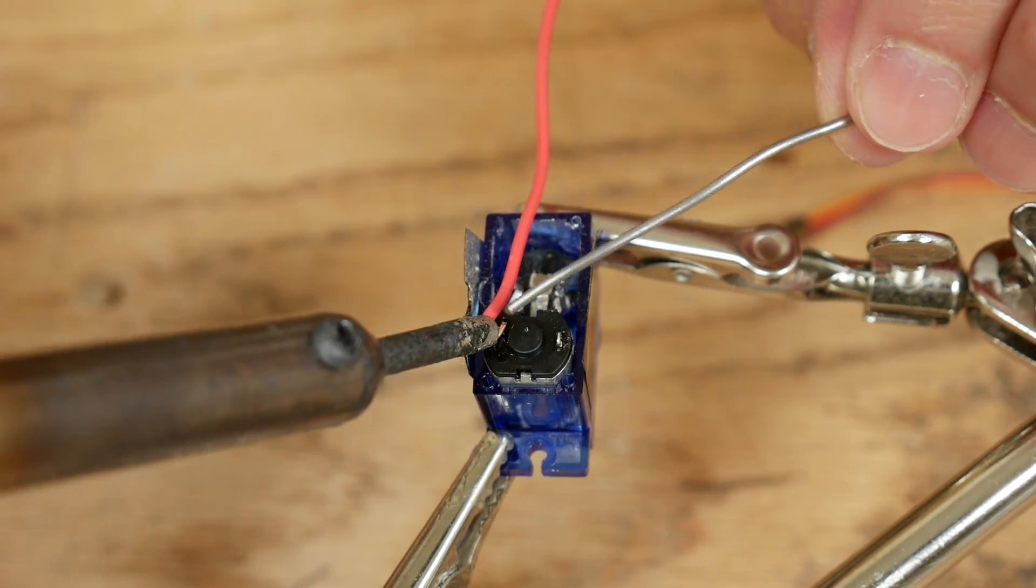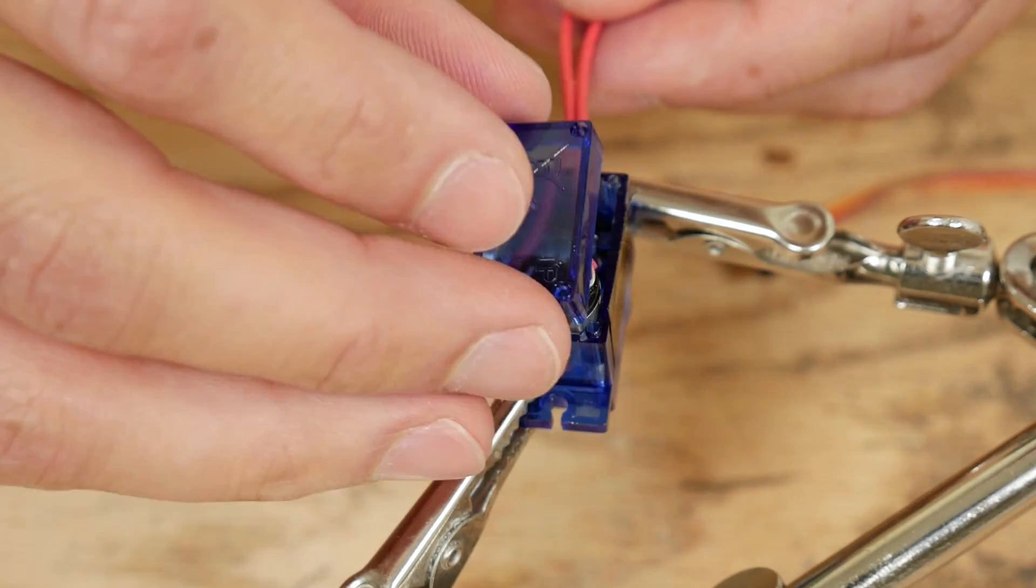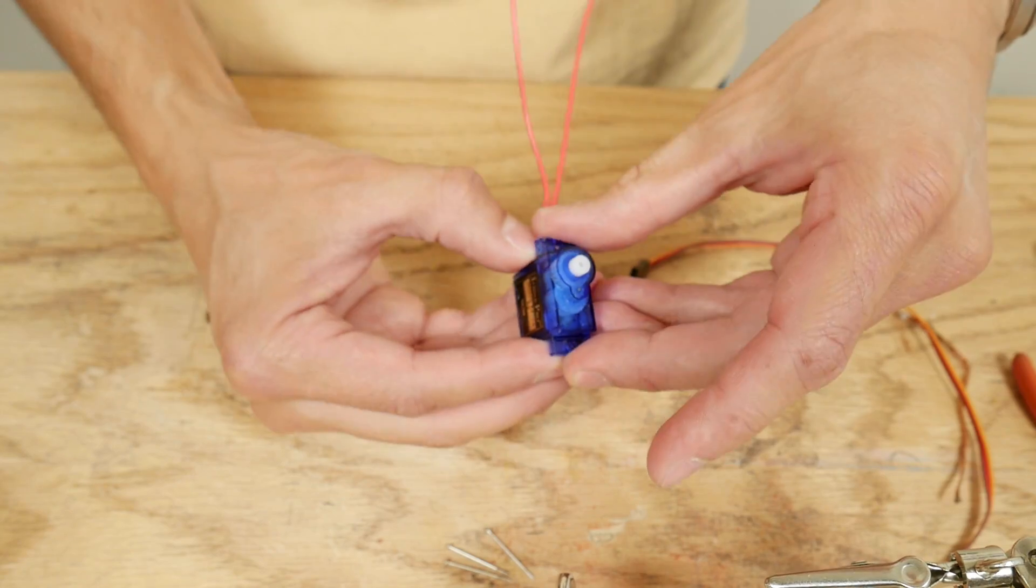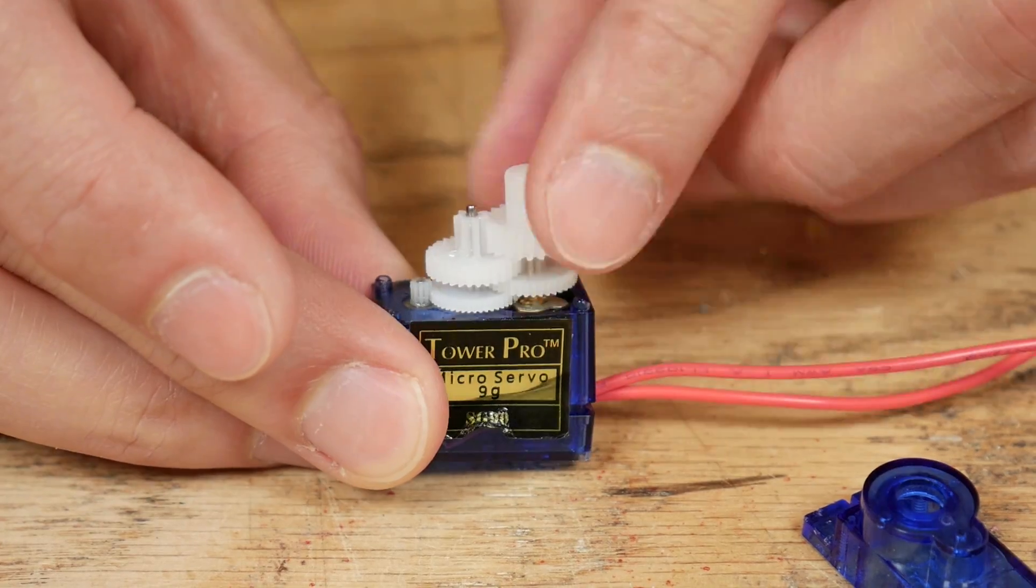Then I soldered two new longer wires onto the motor. Then popped open the top and removed the top gear.